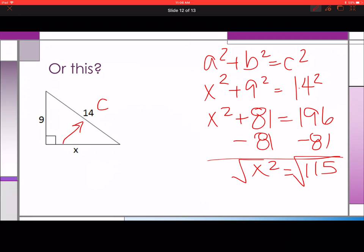Okay, so 115. Well, I know 5 is a factor. 5 times what? Well, pull out your calculator, do 115 divided by 5, and that's 23. Oh, that's both primes. So this is our final answer, x is equal to the square root of 115.